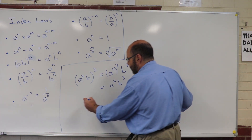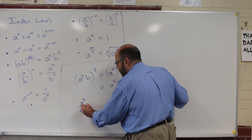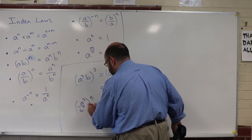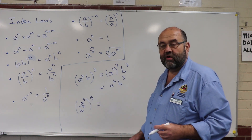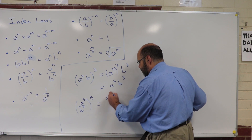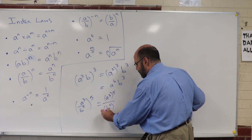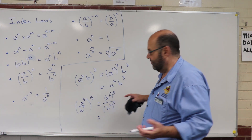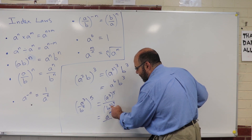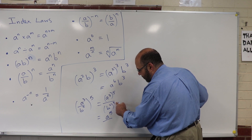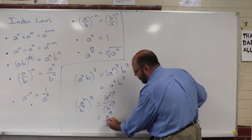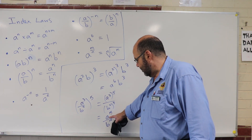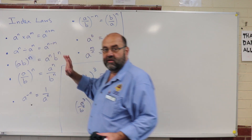It would be the same if I was dividing. So if I had (a cubed over b squared) all to the power of 5 — the a cubed gets a power of 5 and the b squared gets a power of 5. So that's 5 times 3, giving a to the power of 15, and 5 times 2, giving b to the power of 10. That's all we can do there — we can't simplify further because they're not the same base. You can only subtract powers when you've got the same base.